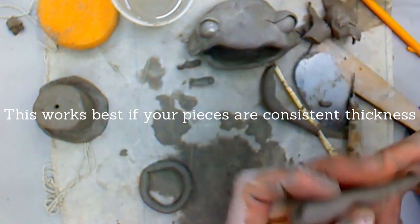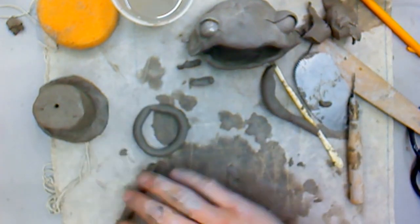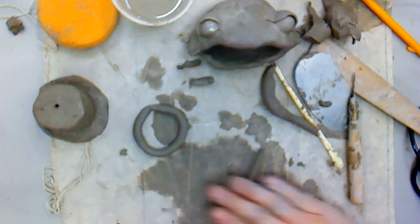With coils we want our pieces to be as consistently thick as possible, so we want to try to make them the same thickness all the way along the coil.